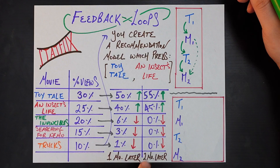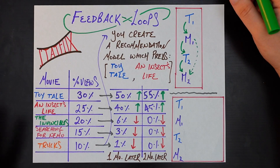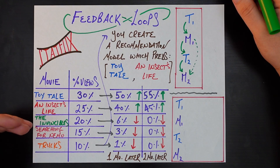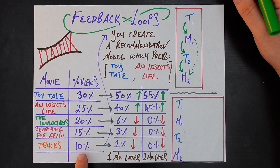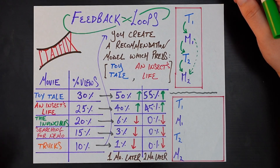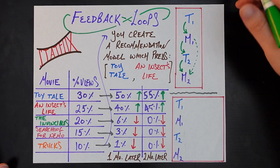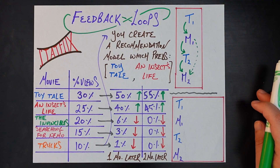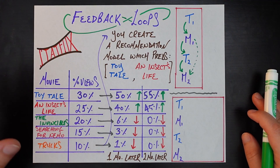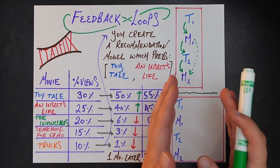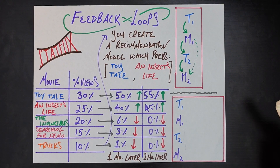Now we understand the problem and can see what weird situations it gets you into — all your inventory is unused. Invincibles, Searching for Nemo, and Trucks had a decent base: 20%, 15%, and 10% — so 45% of people were originally interested in those movies. Now no one even has a chance to view them because our recommendation model is pushing so hard for the other two. That doesn't seem correct. So the question is: how do we avoid this? How do we mitigate this problem?